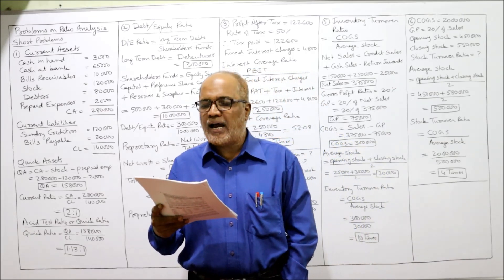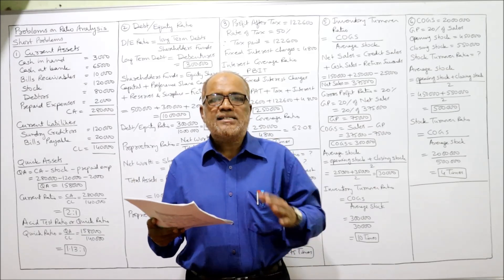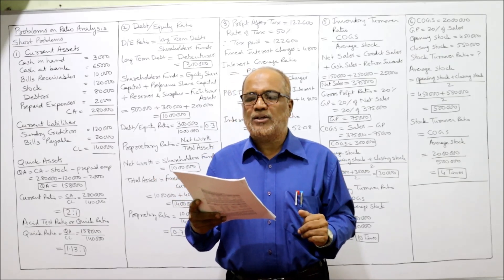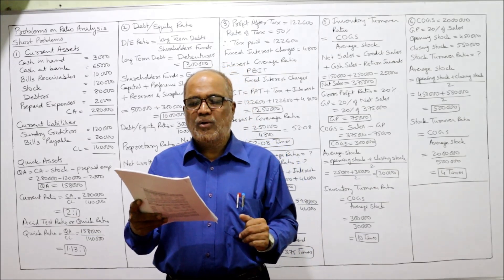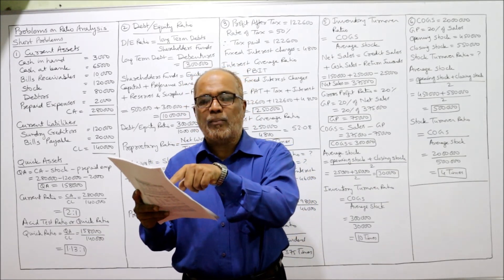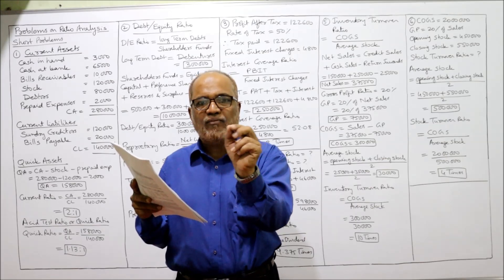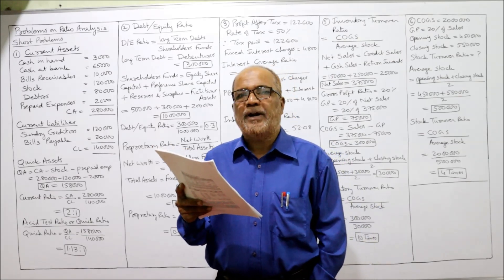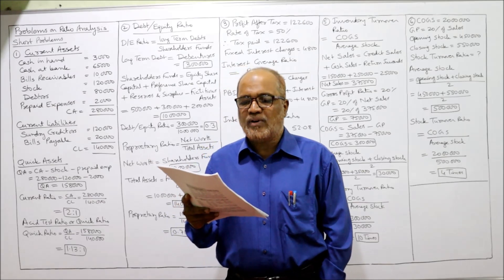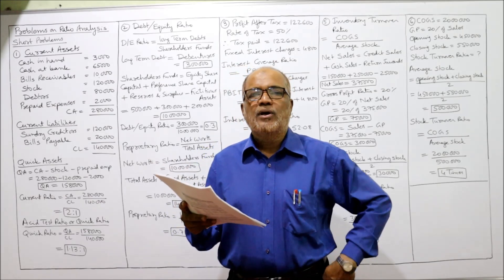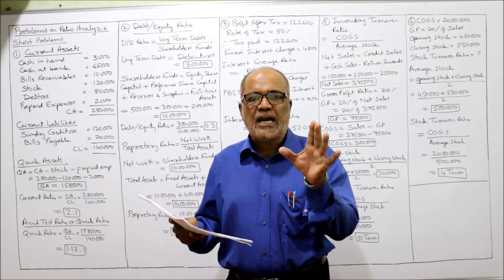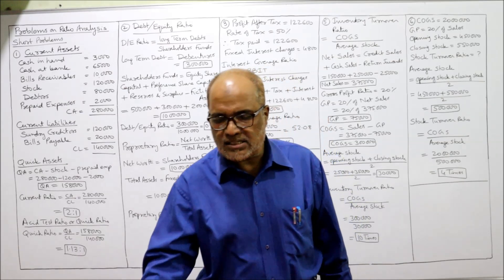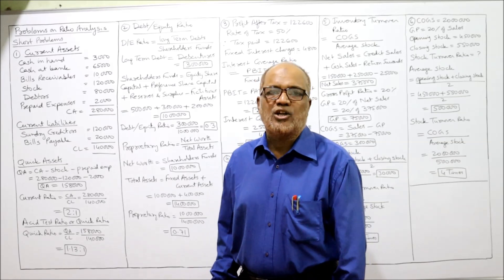Problem 1: From the following particulars, calculate current ratio and acid test ratio. Acid test ratio means quick ratio. The data given: cash in hand 3,000; cash at bank 65,000; bills receivable 10,000; stock 1,20,000 (note: there is a printing mistake in the problem — it should be 1,20,000); debtors 80,000; prepaid expenses 2,000; sundry creditors 1,20,000; bills payable 20,000.